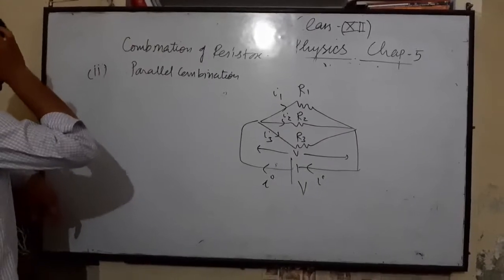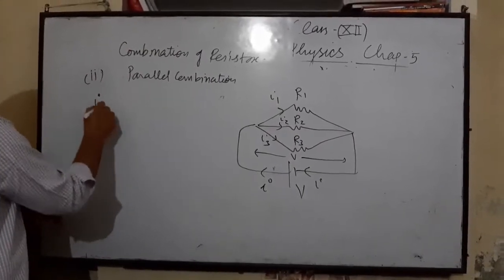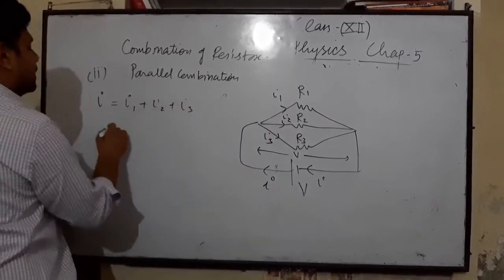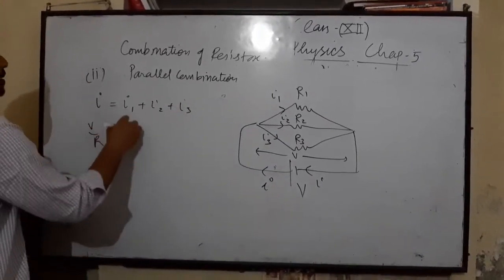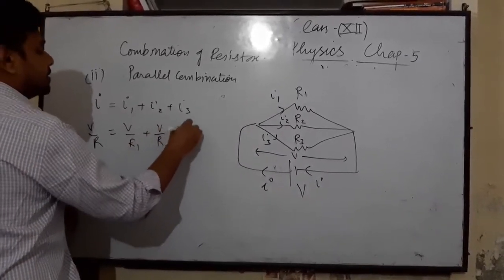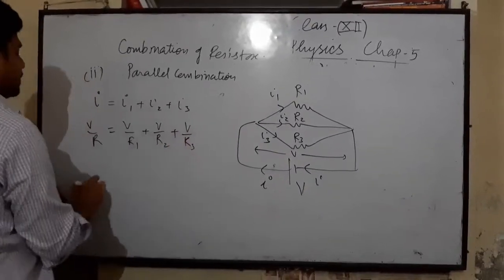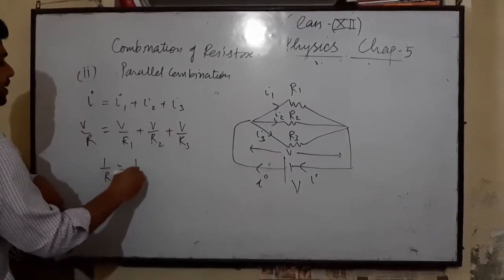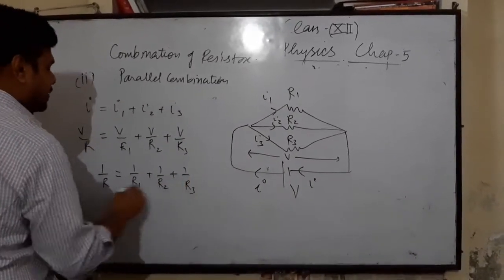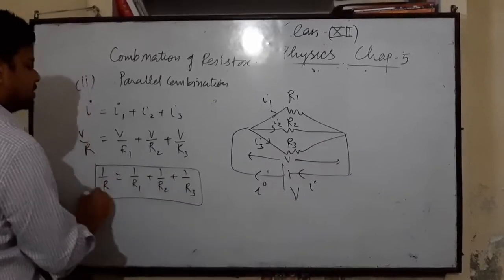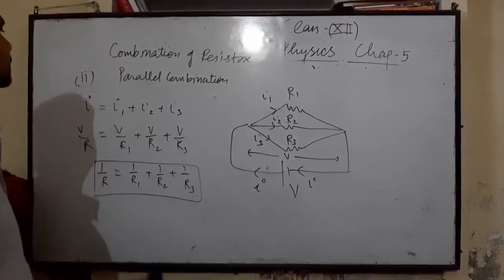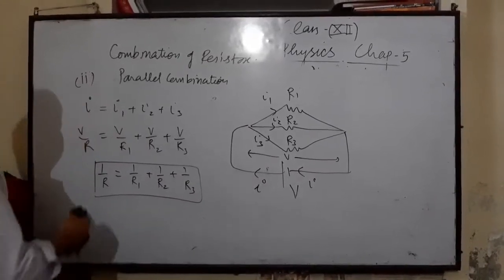In parallel combination, the total current I = I1 + I2 + I3. Using I = V/R, where R is the equivalent resistance, we get 1/R = 1/R1 + 1/R2 + 1/R3. This is the equivalent resistance in the parallel combination of resistors.